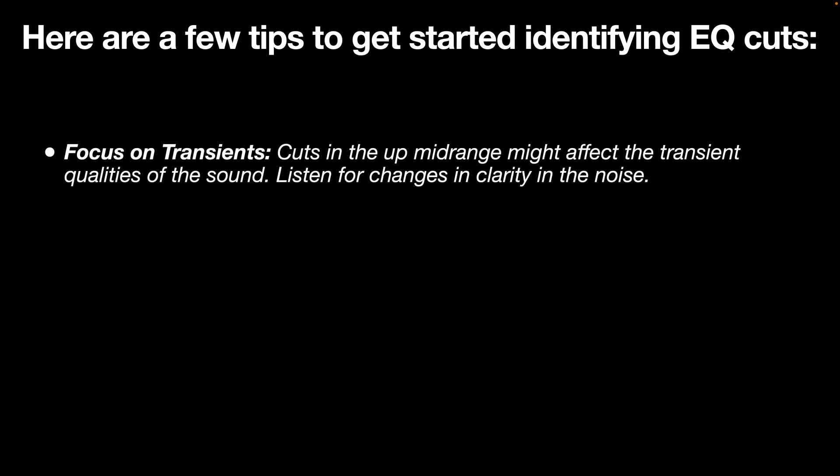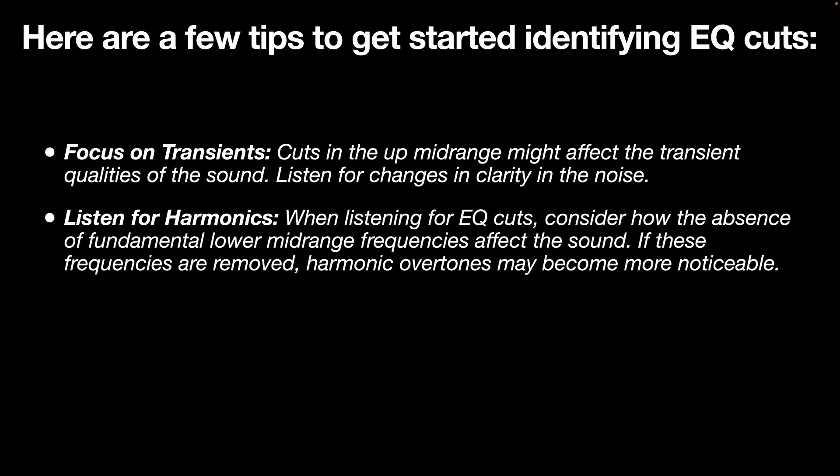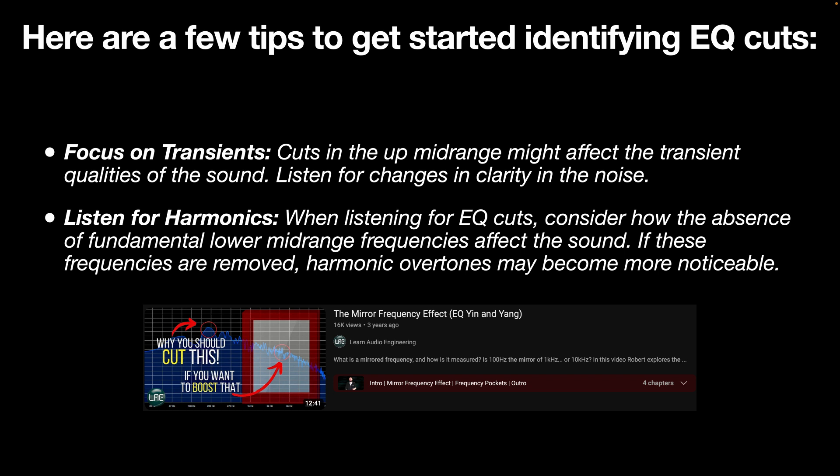Attenuation in the upper midrange may affect the transient qualities of a sound — listen for changes in clarity within the pink noise. When listening for EQ cuts, consider how the absence of fundamental low midrange frequencies can affect the sound. If these frequencies are removed, harmonic overtones may become more noticeable. In the context of pink noise, this translates to paying more attention to subtle shifts in the tonal balance. If harmonics become more pronounced due to an absence of fundamental frequencies, it can indicate an EQ cut in the lower midrange area. This is explained more in my video on the mirror frequency effect.